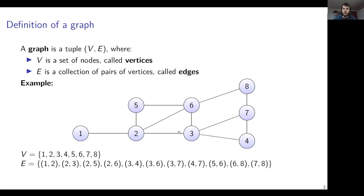In text form, V is just a set of all these numbers, because all those numbers were the vertices. E is a collection of pairs of vertices — this collection consists of everything between the brackets. The thing between brackets is an edge; for example, the edge from vertex 1 to vertex 2, and the edge between vertex 2 and 3.